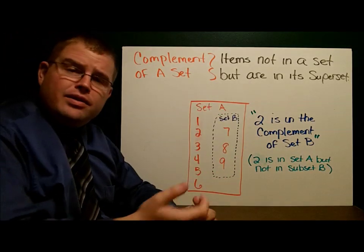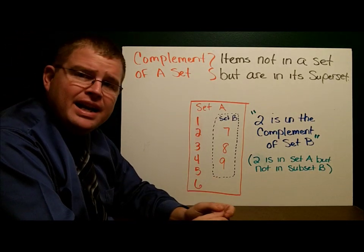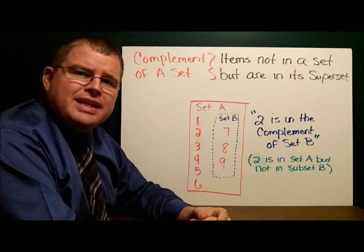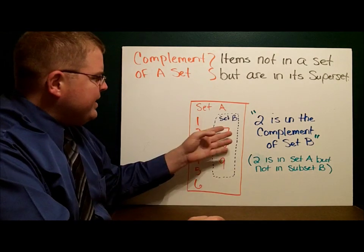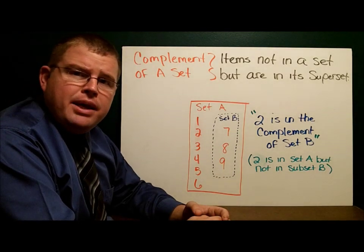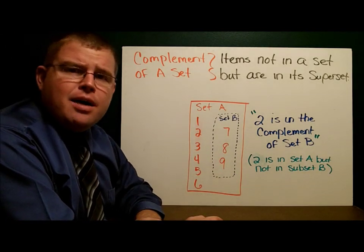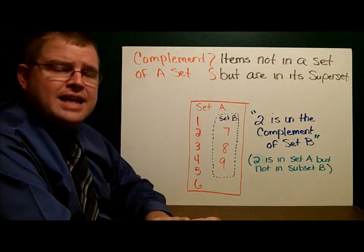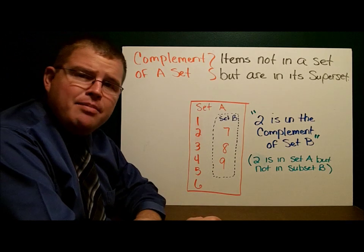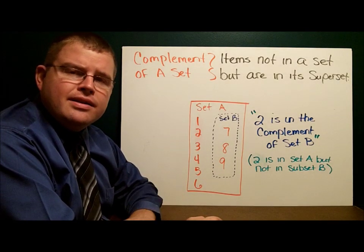Here's the picture we saw a little bit ago. We had set A with 1, 2, 3, 4, 5, 6, 7, 8, 9. We had set B that had 7, 8, 9. We said set B was a subset of A because everything from B was in the bigger set A. However, not everything is in B. The number 2, for example, is not in set B. It's in the complement of B. The number 4 is not in set B. The number 6 is not in set B. It's in the complement of B because it's not in the smaller set.